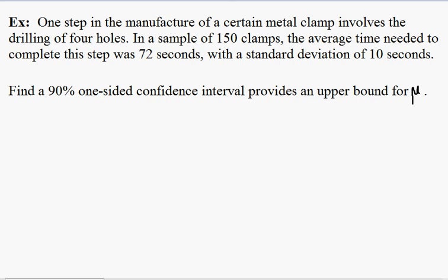Let's now consider this one-sided confidence interval problem for a population mean from a large sample. We have a sample of 150 clamps. The average time needed is 72 seconds with a standard deviation of 10 seconds. Find a 90% confidence interval that's an upper bound for the mean.